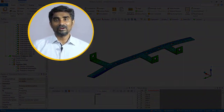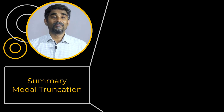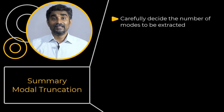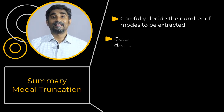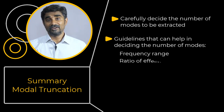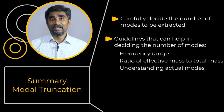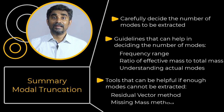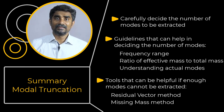With this, we conclude our walkthrough workshop. While performing linear dynamic analysis using the mode superposition method, it is important to carefully decide the number of modes that need to be extracted. Guidelines such as frequency range, the ratio of effective mass to total mass, and understanding the actual modes can help decide on the number of modes sufficient for accurate results. Additionally, tools like the residual vector method and missing mass method can be helpful when enough modes cannot be extracted for specific linear dynamic analysis types. I hope you have found this video informative. Thank you for watching and do check out our other courses.